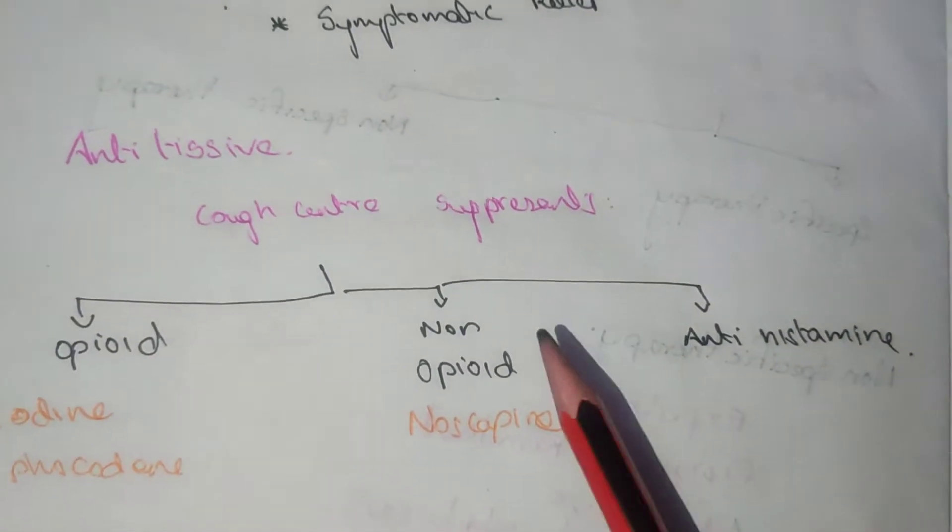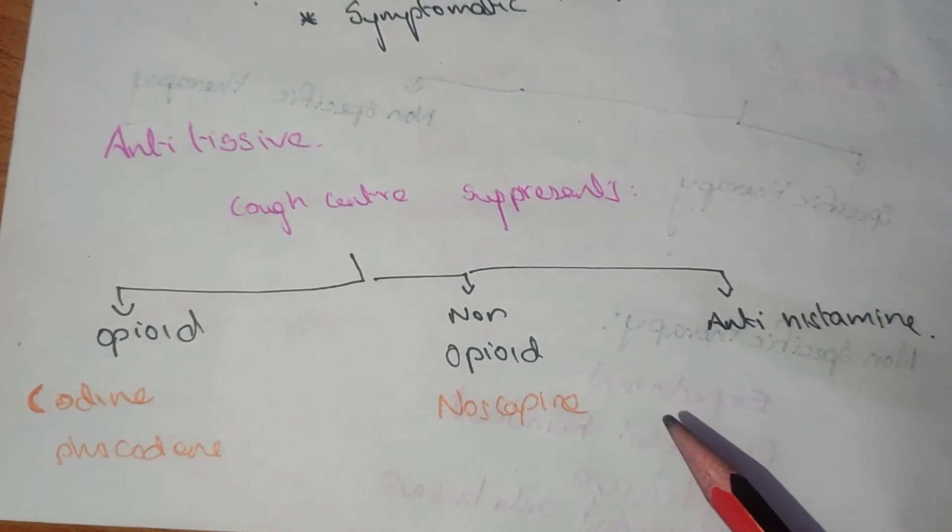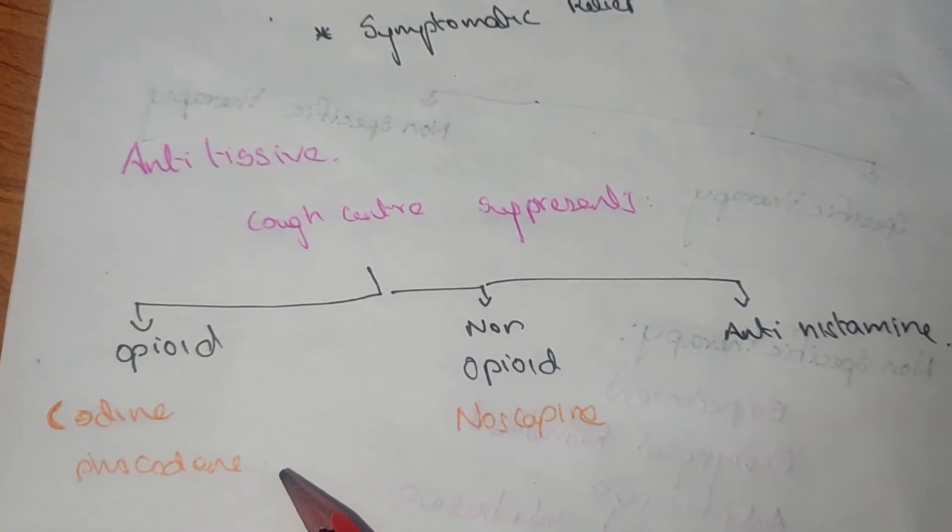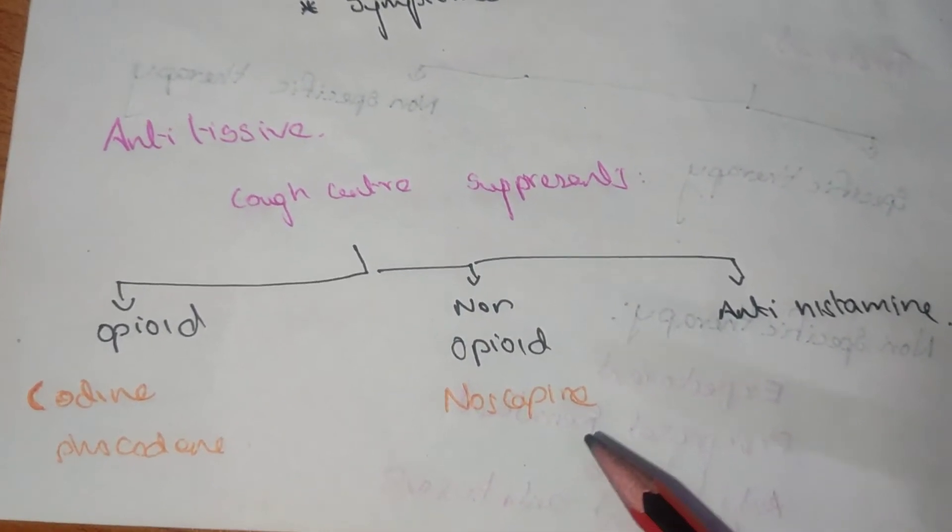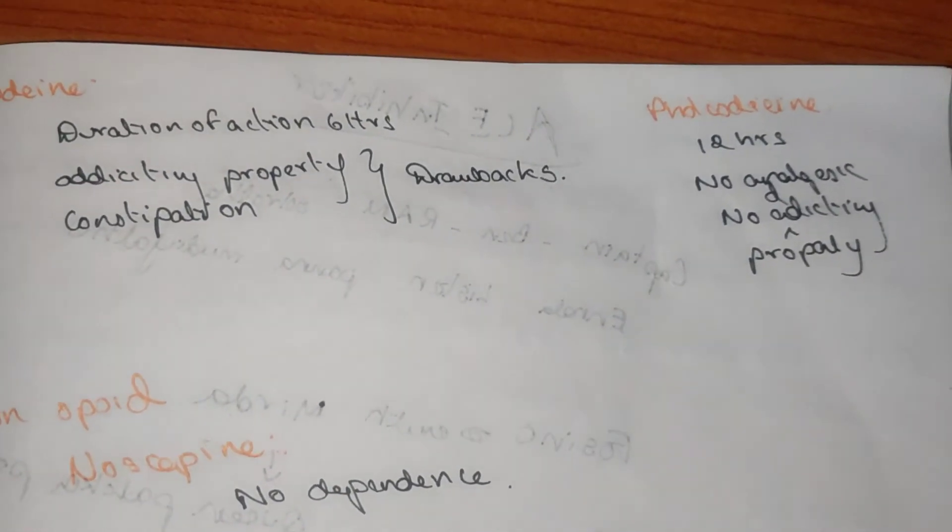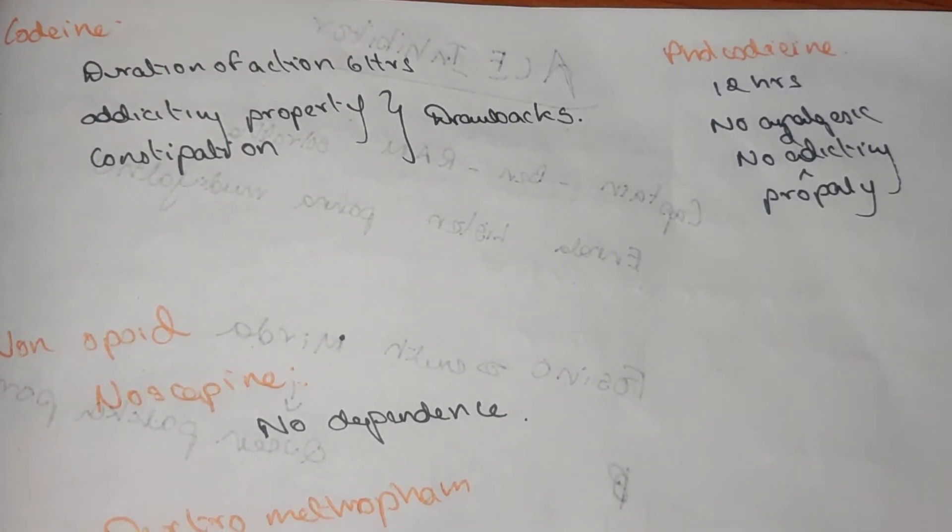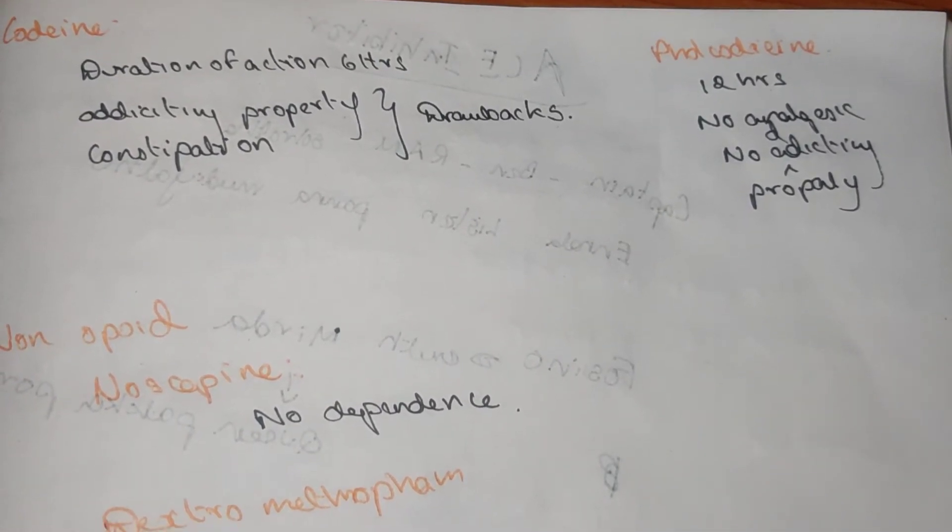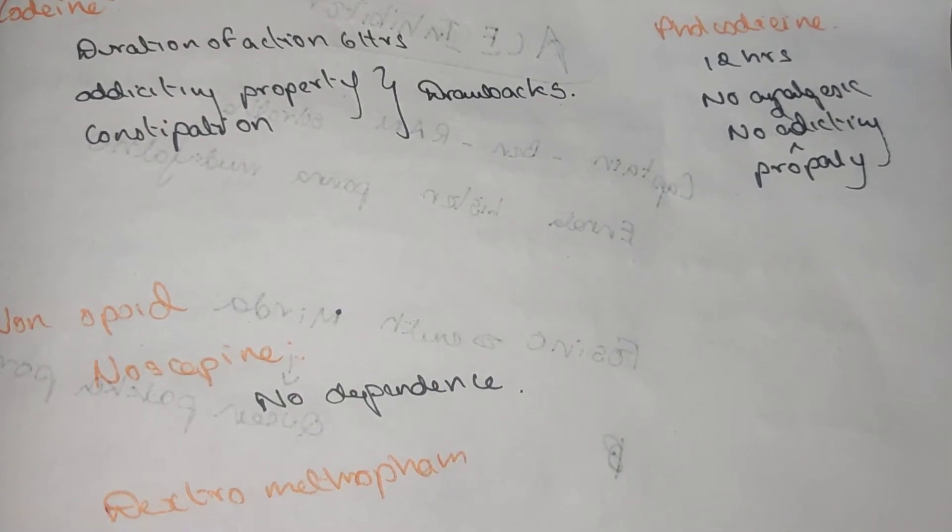The anti-tussives are different: can be said as opioid, non-opioid, and antihistaminics. Opioids are codeine and pholcodeine. Non-opioids are noscapine. Codeine action is six hours. It has addictive property and there is constipation. These are the drawbacks of codeine. Pholcodeine is 12 hours. There is no analgesic properties, there is no addictive properties.